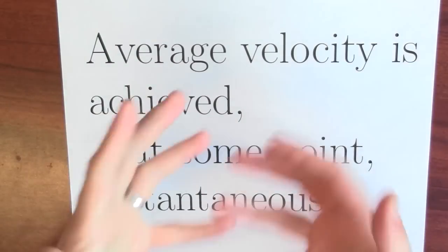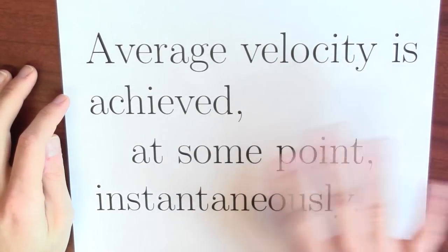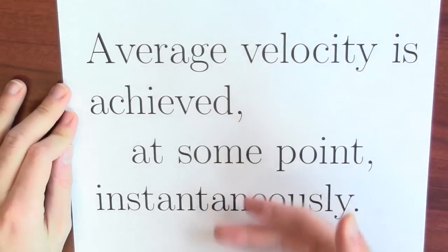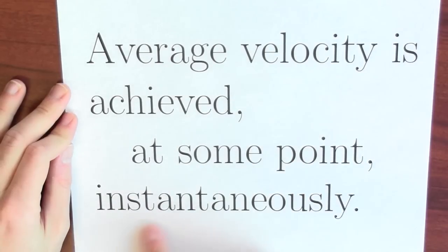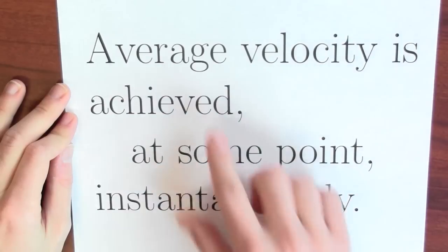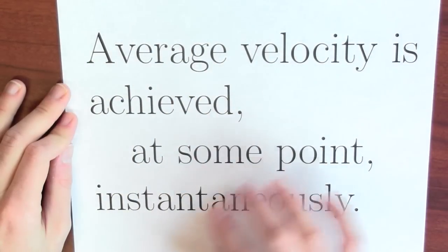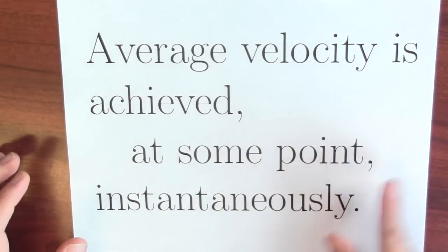That statement seems really complicated, so let's boil it down to something we can really believe in. Here's one interpretation: if that function gives you position and the input is time, so that the derivative is your velocity, then that formula is saying that your average velocity is achieved at some point instantaneously. That difference ratio calculates the average velocity, and instantaneous velocity is the derivative. The mean value theorem says those are equal at some point in between.